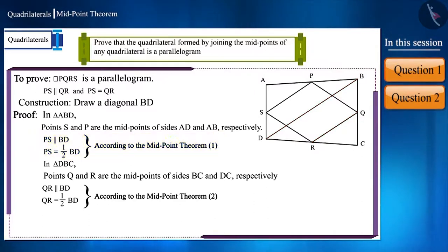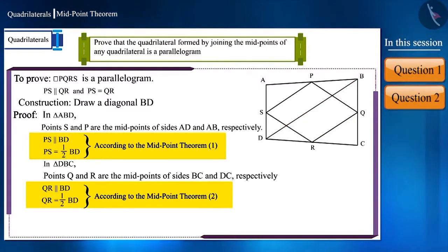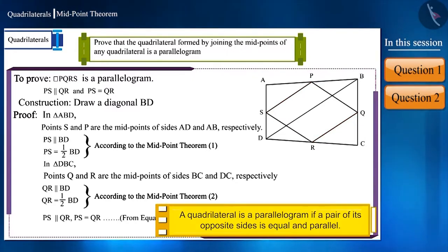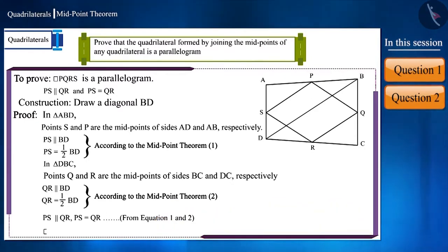By looking at equations 1 and 2, we can say that in quadrilateral PQRS, one pair of sides are equal and parallel. And we know that in a quadrilateral, if one pair of opposite sides are equal and parallel, then it's a parallelogram. Therefore, quadrilateral PQRS is a parallelogram.